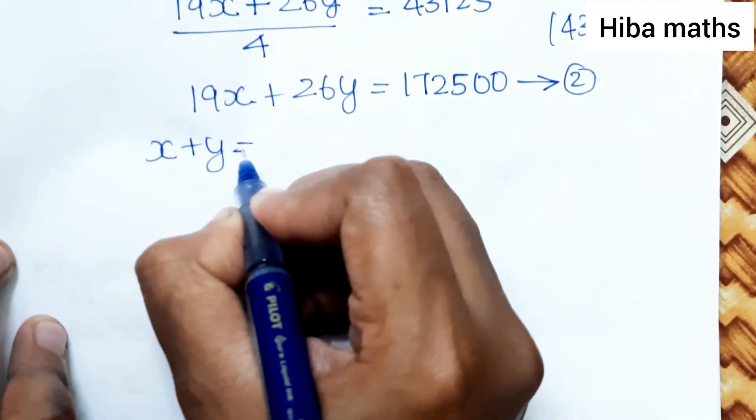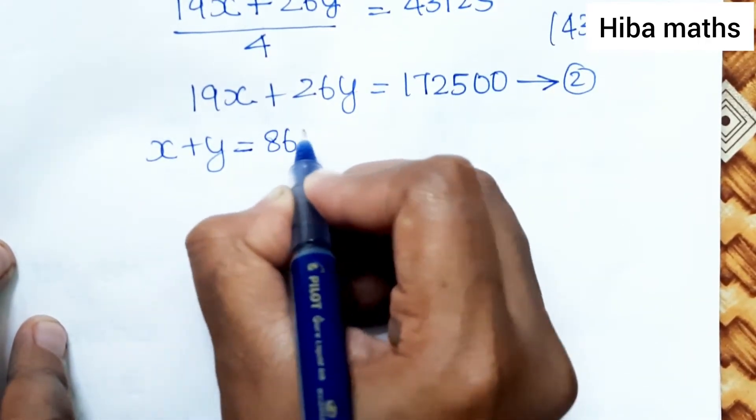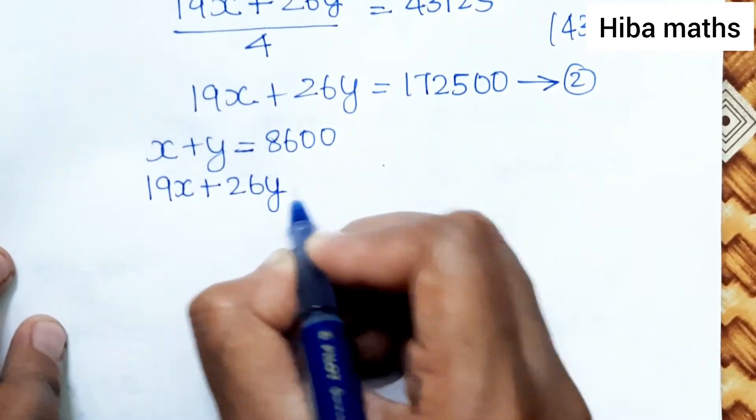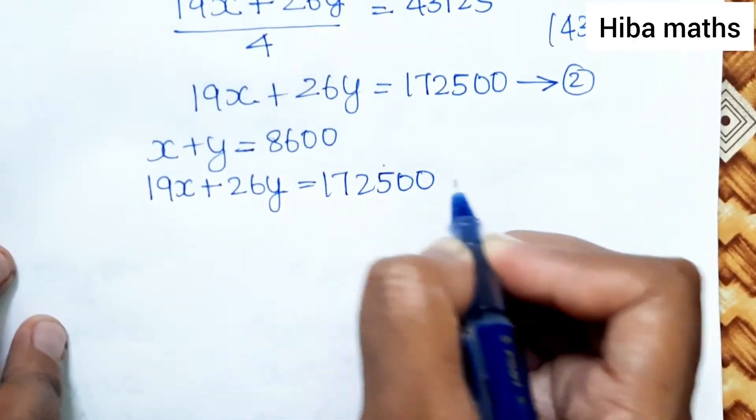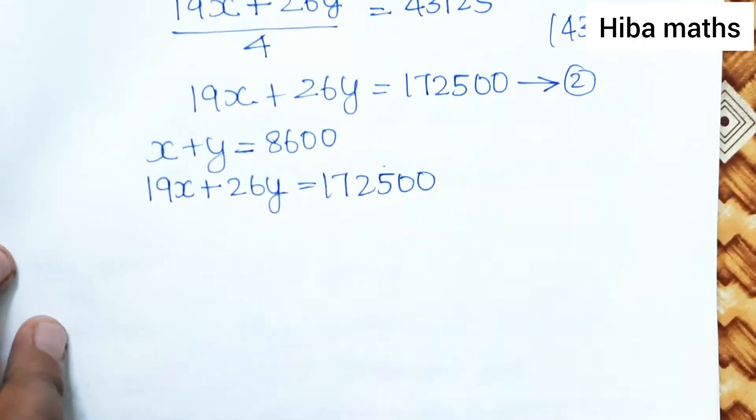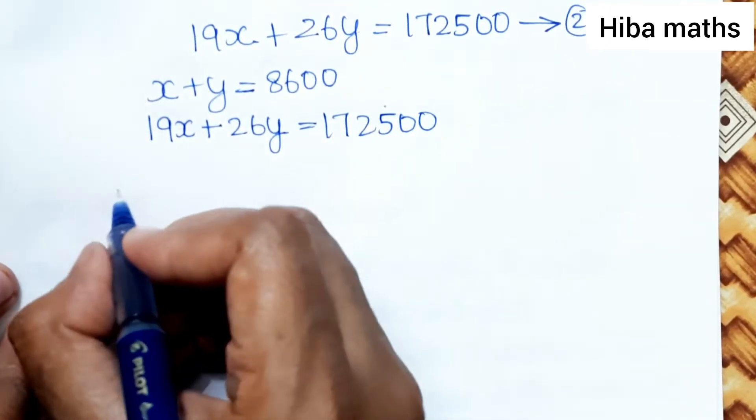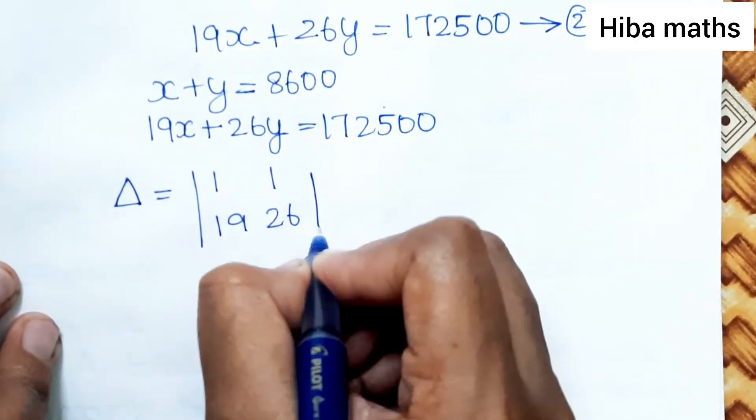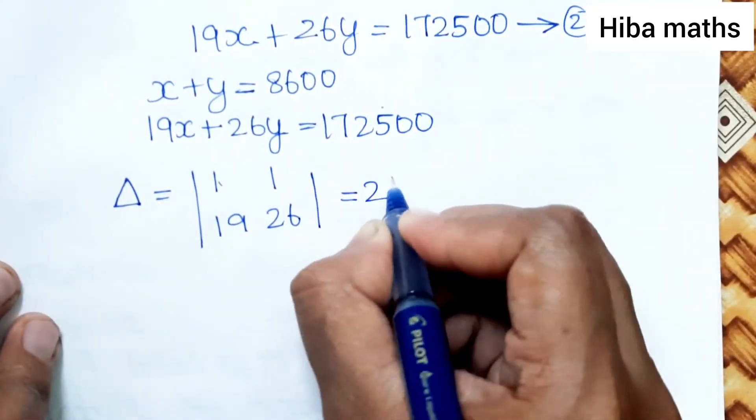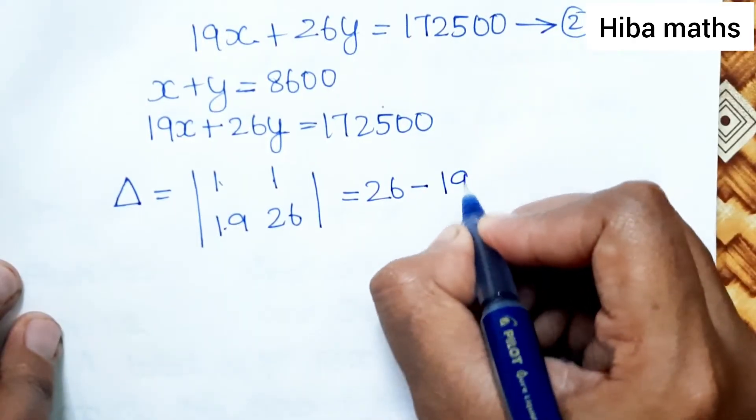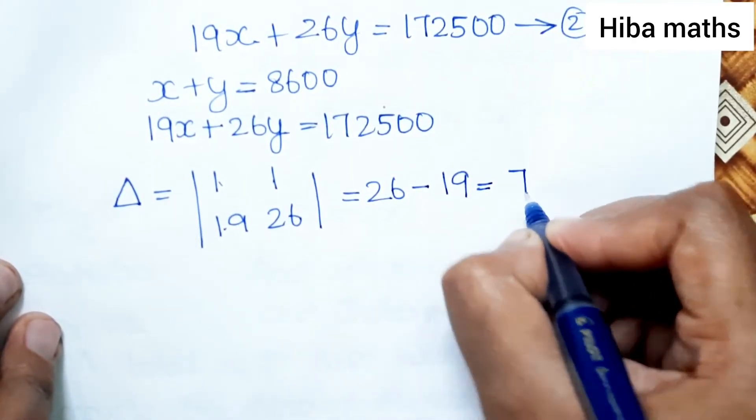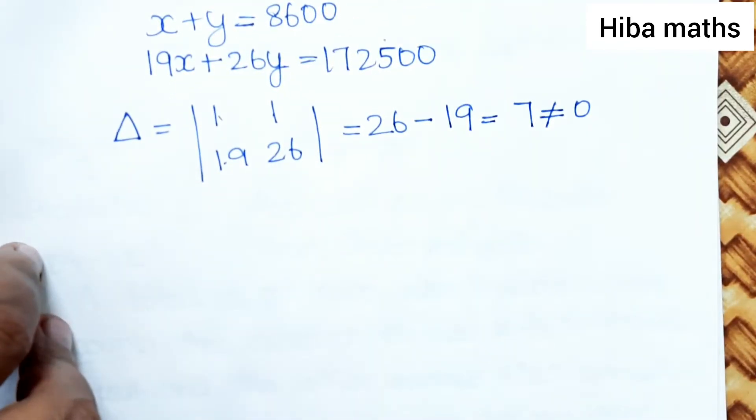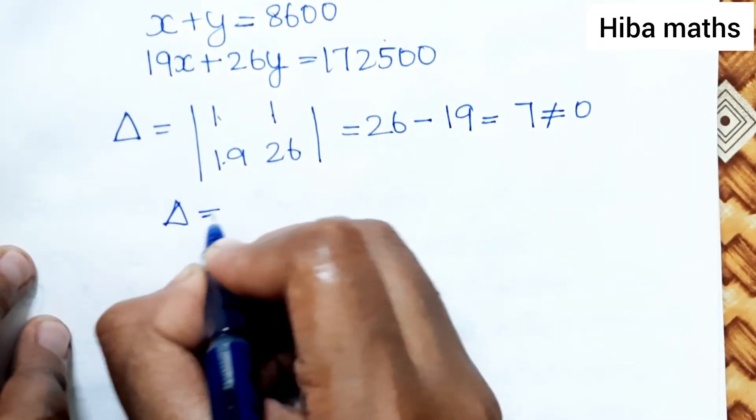Our equations are: X plus Y equals 8,600 and 19X plus 26Y equals 172500. First find the determinant value: determinant is 1, 1, 19, 26. That equals 26 minus 19 equals 7, which is not equal to 0. So we can definitely use the determinant method.